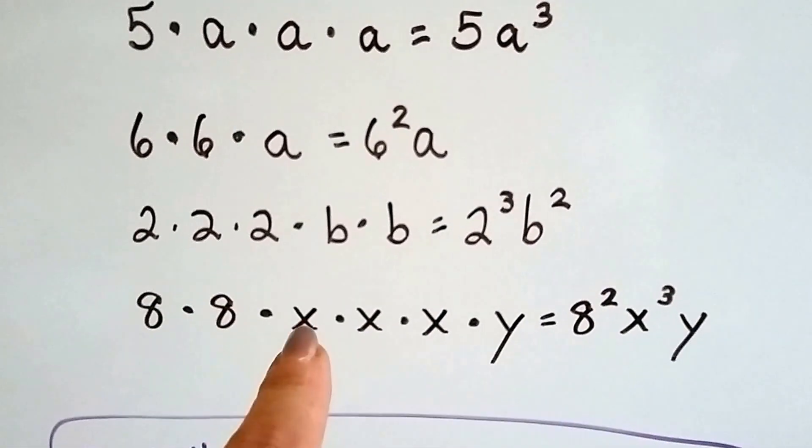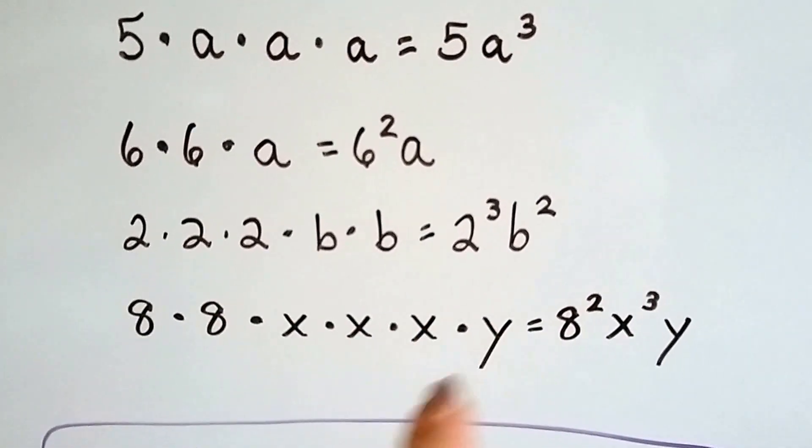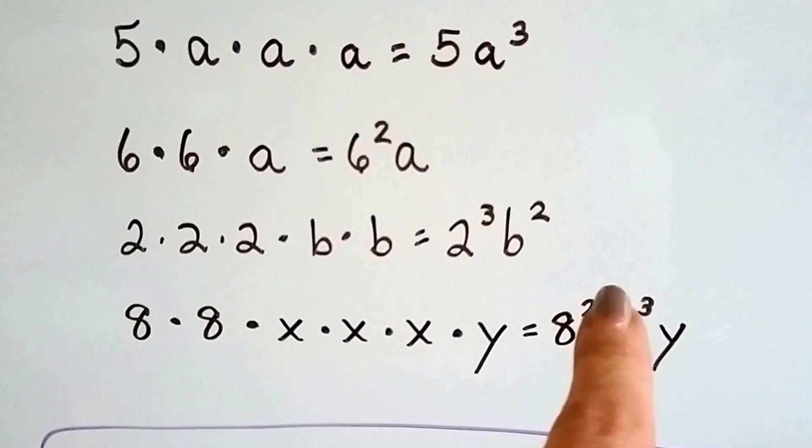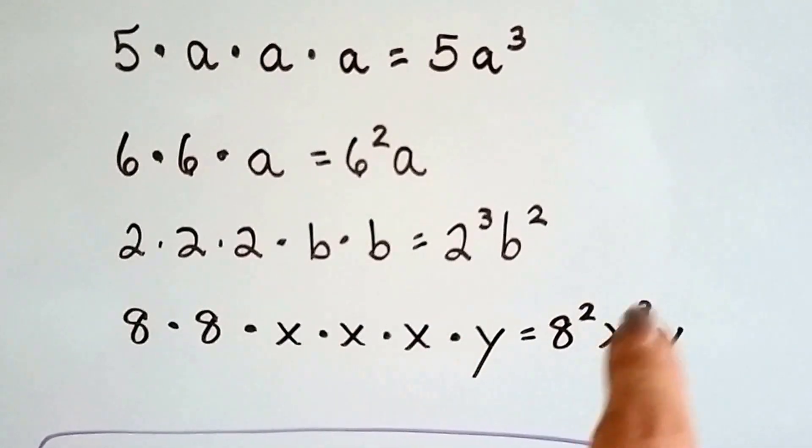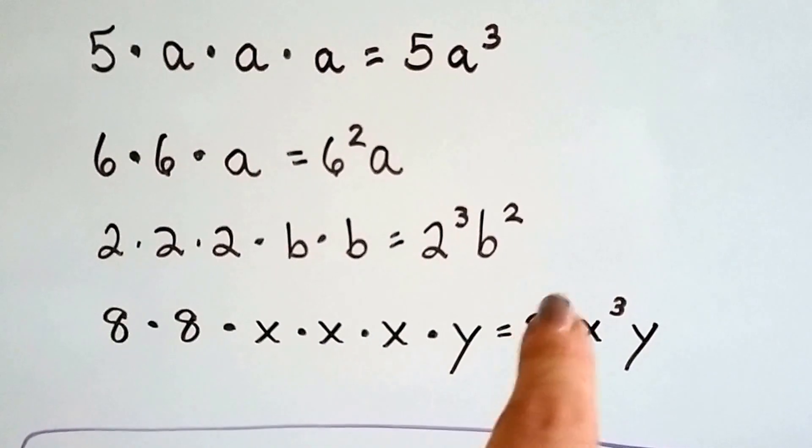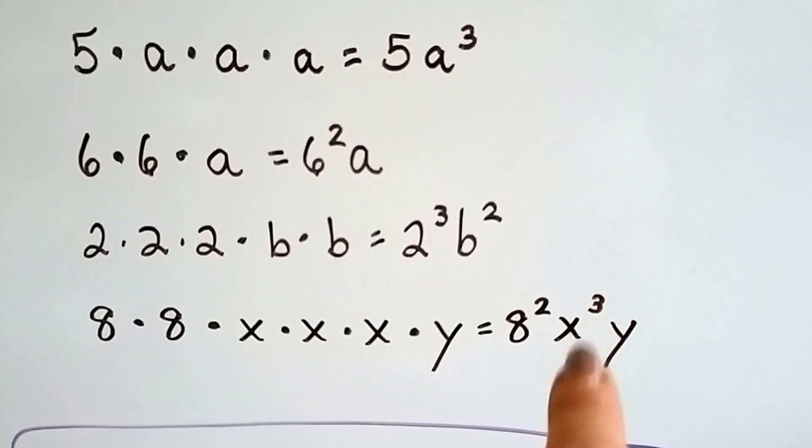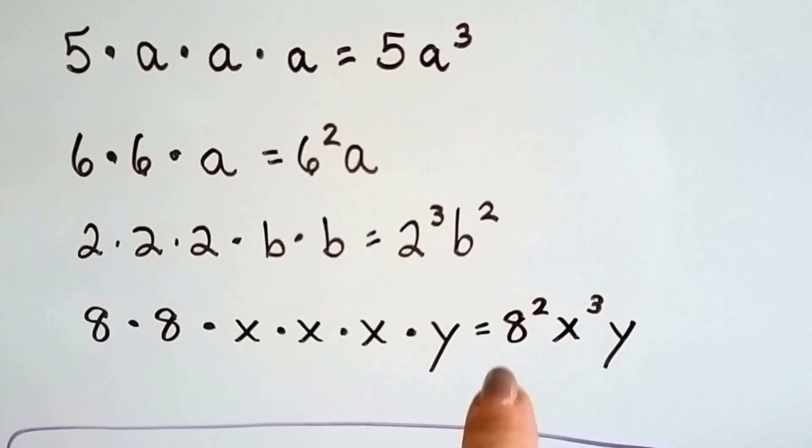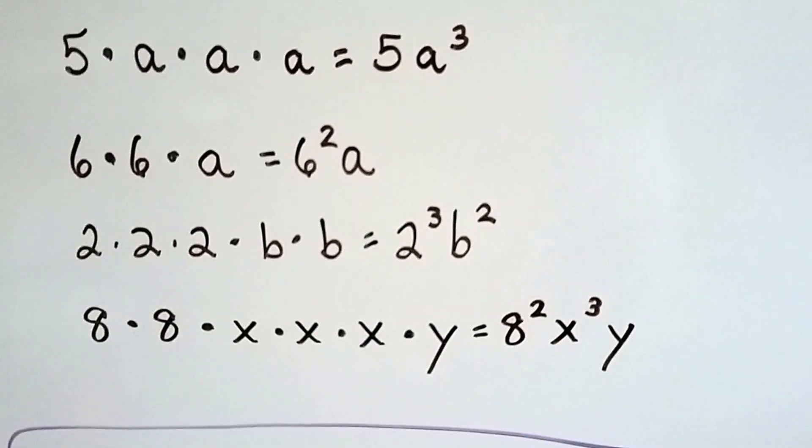If we had 8 times 8 times x times x times x times y, there's 2 8s, so that's 8 squared. There's 3 x's, so that's x to the third power, and there's 1 y. We get 8 to the second power x to the third power y, or it could be read as 8 squared x cubed y. See?